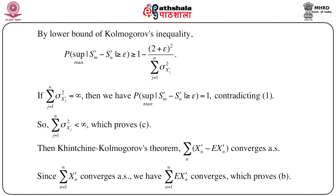Applying Khinchin–Kolmogorov's convergence theorem, the summation of x_n prime minus the expectation of x_n prime converges almost surely. Since it is given that summation x_n prime converges almost surely, we also have that summation of the expectation of x_n prime converges, which proves condition B. So we have proved parts A, B, and C. Part A is proved through the Borel 0-1 law, part C through the lower bound of Kolmogorov's inequality, and part B by applying Kolmogorov's convergence theorem.